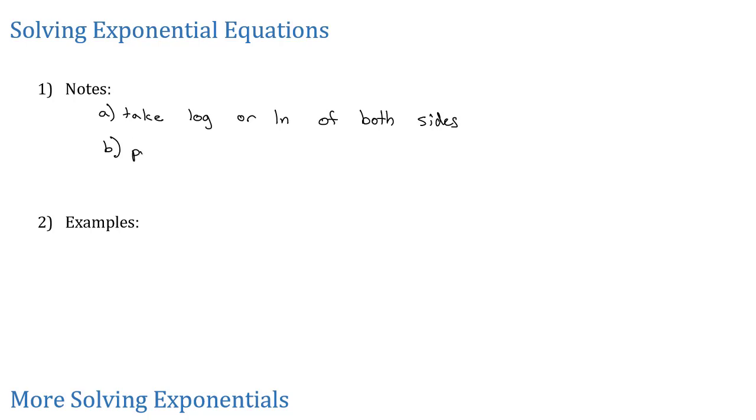Another important property for logarithms - and there are lots of properties you'll study in pre-calculus - but for now, the one property we're going to use is that log base A of B to some exponent, if there is an exponent inside a logarithm, it can move out front and be rewritten as x log base A of B. So it moves out front as a factor instead of as an exponent on the B. That's going to allow us to solve.